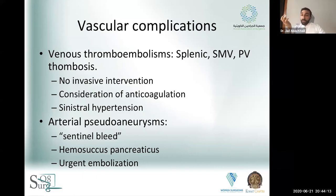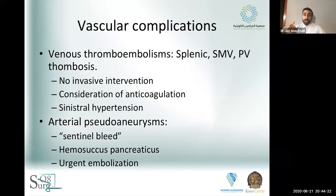Thromboembolic disease on the venous side — thrombosis of the splenic vein, superior mesenteric vein, or portal vein — is also not uncommon. No invasive intervention is warranted; there's a consideration of anticoagulation. Some of these patients eventually develop sinistral hypertension. The priority is just to get them through the acute illness.